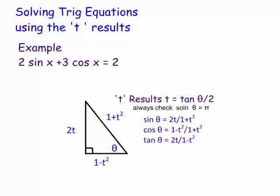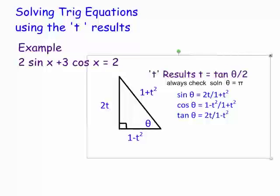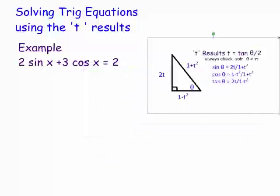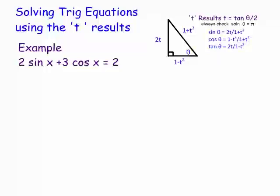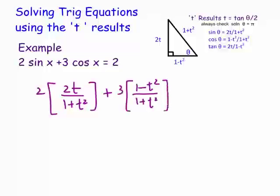So let's go through and see how we solve a trig equation using the t-results. We used the auxiliary angle method before, but here we're going to substitute: 2 times sine x becomes 2 times (2t over (1 + t²)), plus 3 times the cos result (1 − t²) over (1 + t²), and that equals 2.